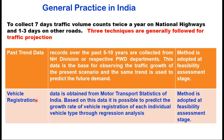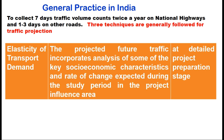The second approach is vehicle registration. Data is obtained from motor transport statistics of India, and based on this data it is possible to predict the growth rate of vehicle registration for each individual vehicle type through regression analysis. This method is also adopted at the feasibility assessment stage. The third approach is elasticity of transport demand, where projected future traffic incorporates analysis of key socio-economic characteristics and rates of change expected during the study period in the project influence area. This technique is generally used at the detailed project preparation stage while preparing the DPR of the project.